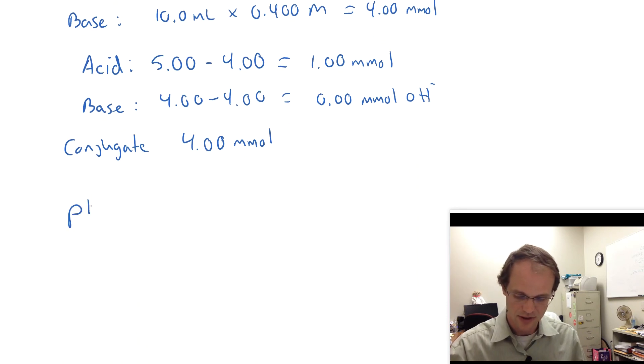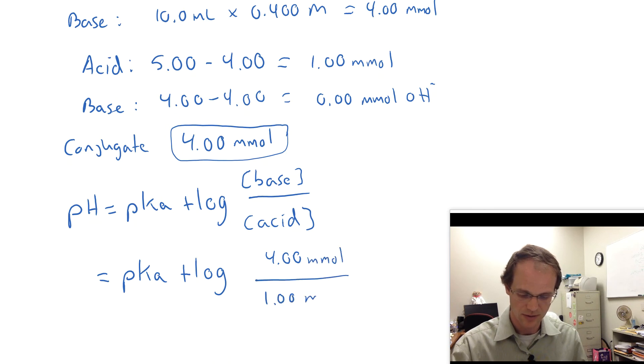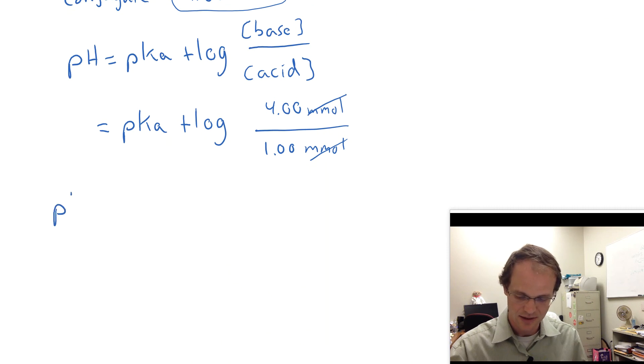So now, if you remember the Henderson-Hasselbalch equation, it's pH equals pKa plus the log of the concentration of your base over the concentration of your acid. Now what's nice about the Henderson-Hasselbalch equation is because we have a ratio of concentrations there, it turns out you can also use a ratio of moles as well, because when you convert moles to molarity, you divide by the volume, and that cancels out in the Henderson-Hasselbalch equation. So I'm just going to go ahead and use my millimoles. So I get pKa plus the log of my millimoles of base. And remember, my base now is talking about my conjugate. So that's going to be 4.00 millimoles and 1.00 millimoles down here. My units will cancel, which is good, because you can't take the log of units.